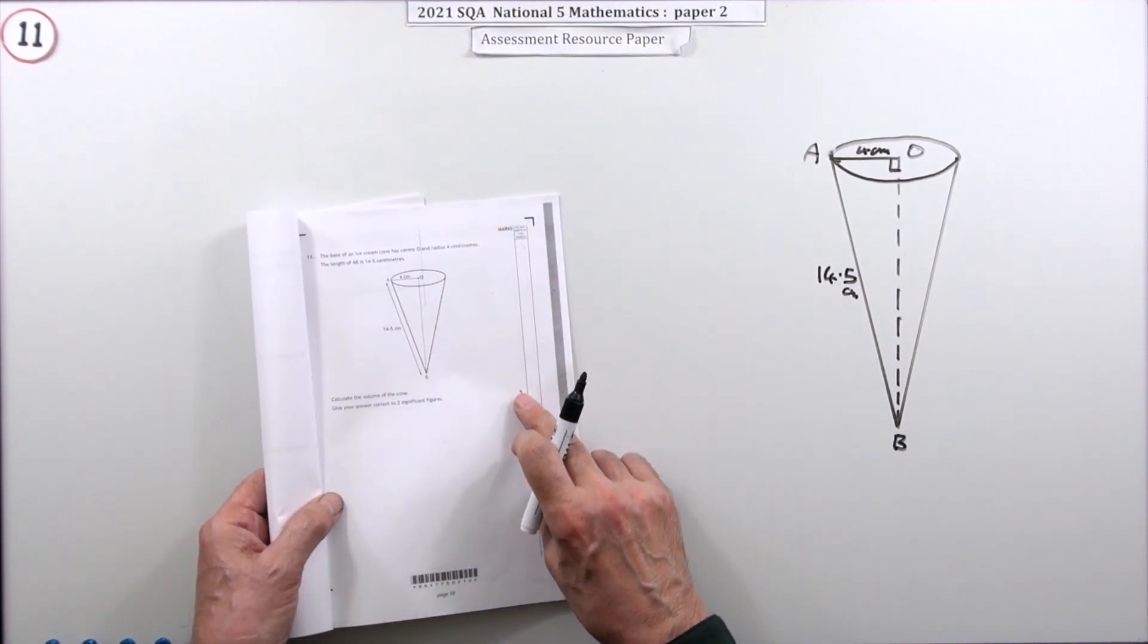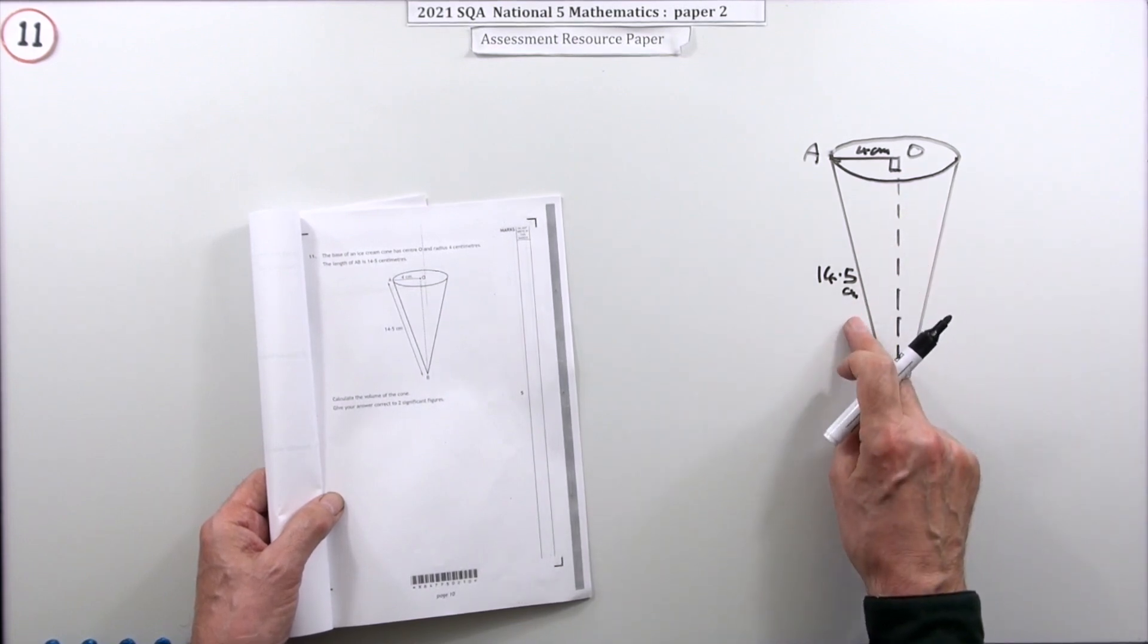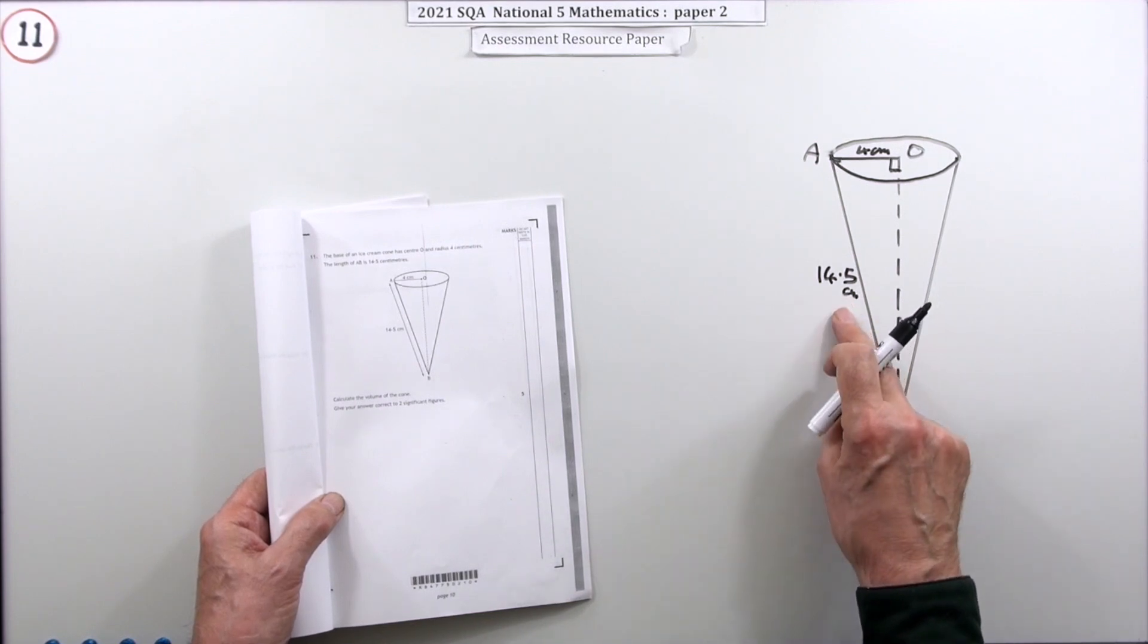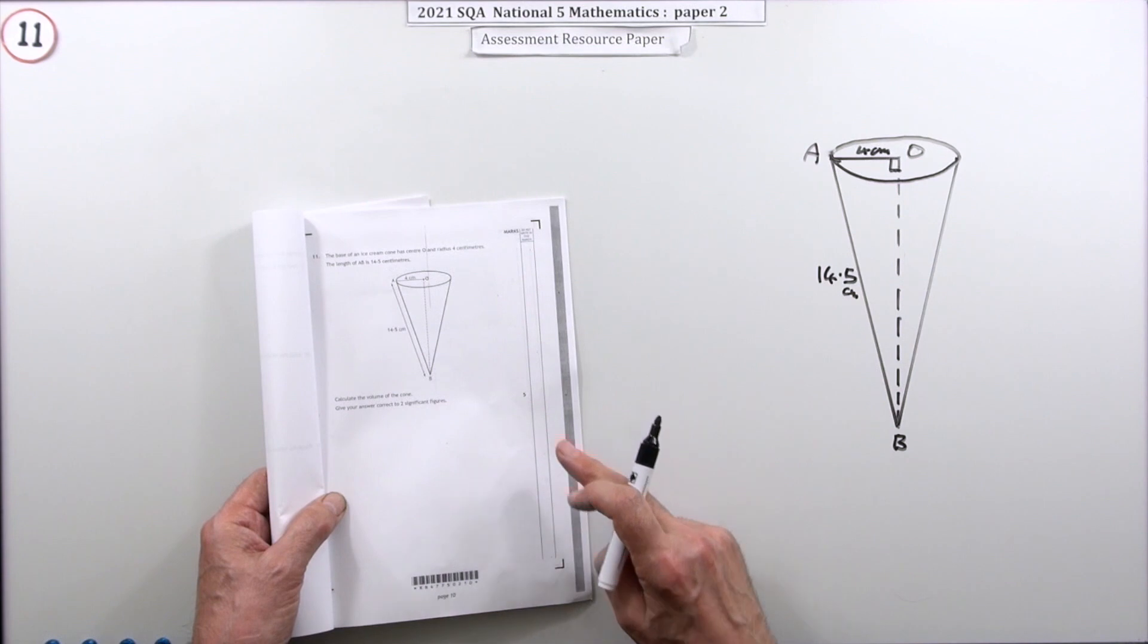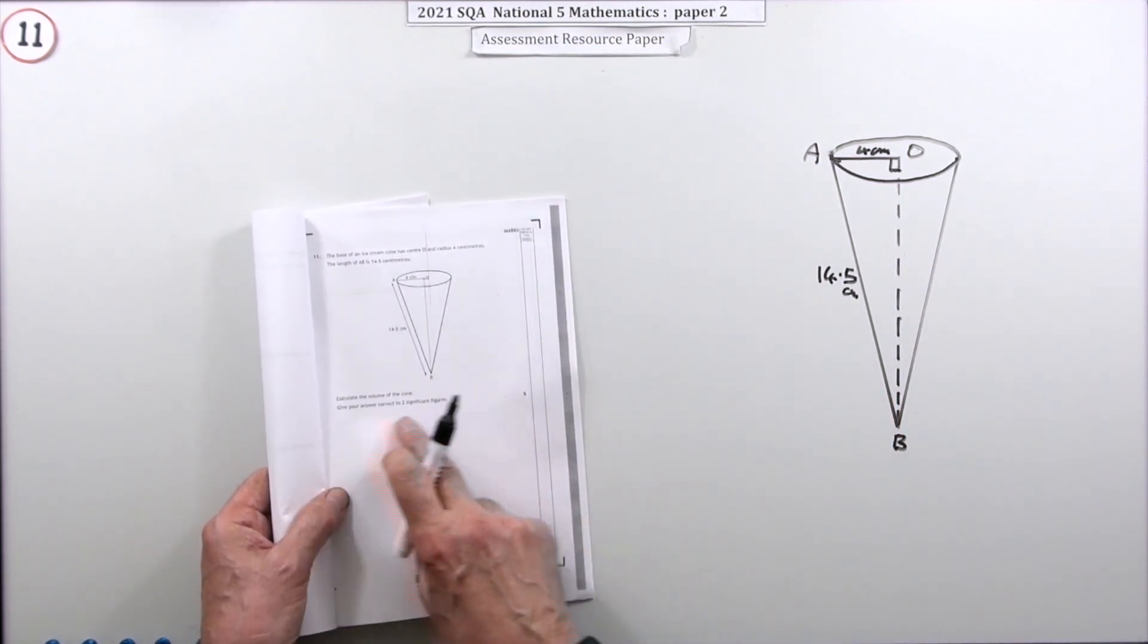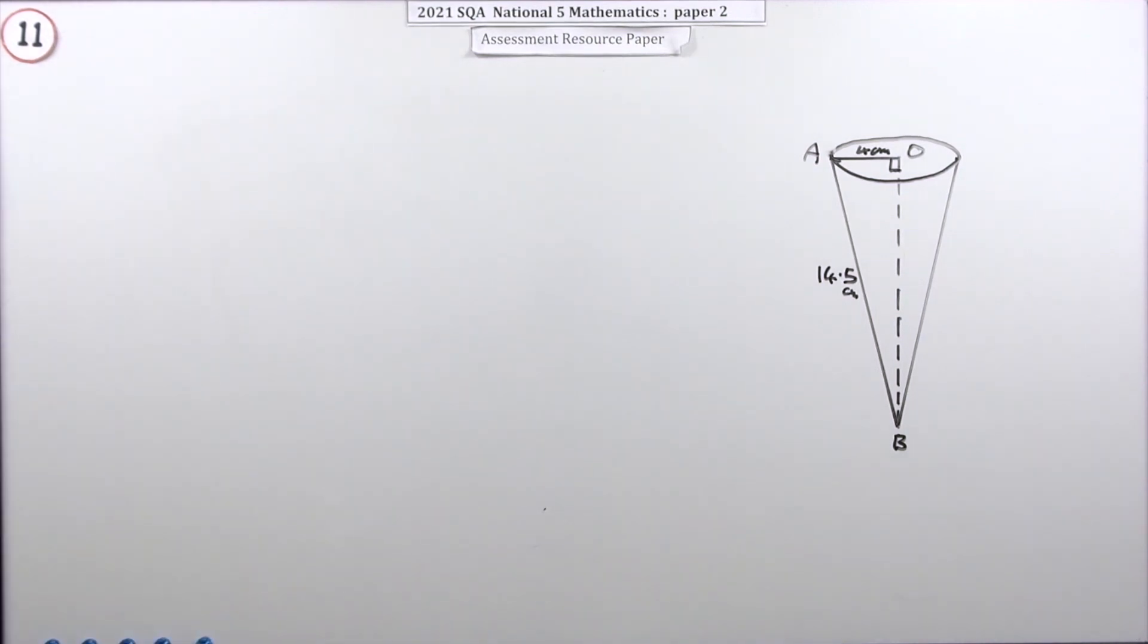...you're not actually told the height of this cone. You've got this dimension here, the slant height—that's the dimension you would want to work out the surface area. So you've got that preliminary calculation to do, and you've also to express your answer a particular way: two significant figures.